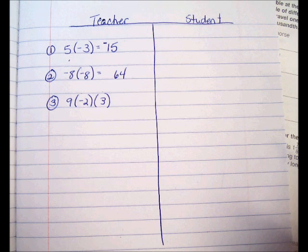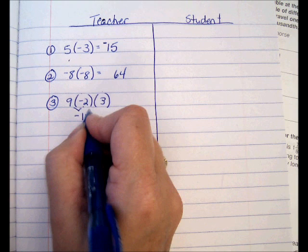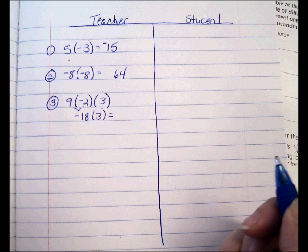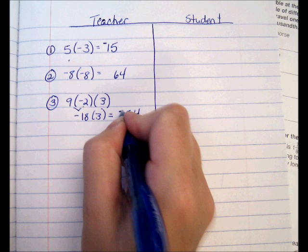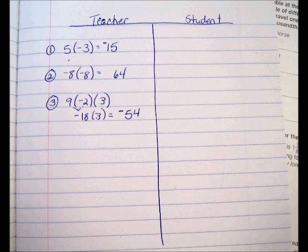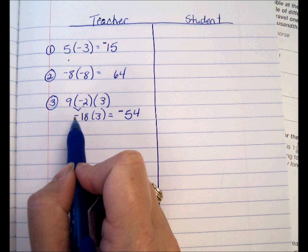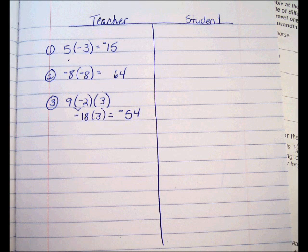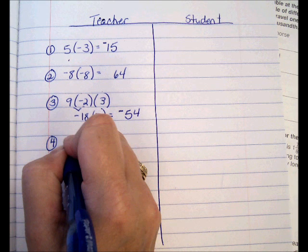Now let's try one with three numbers, like our notes discussed. Nine times negative 2 times 3. You can work left to right: 9 times 2 is 18, and a cop times a gangster gives negative 18. Then negative 18 times 3 is negative 54, because you have a negative and a positive. Or use the counting rule: there is one negative number in the problem — one is odd — so the answer is negative.